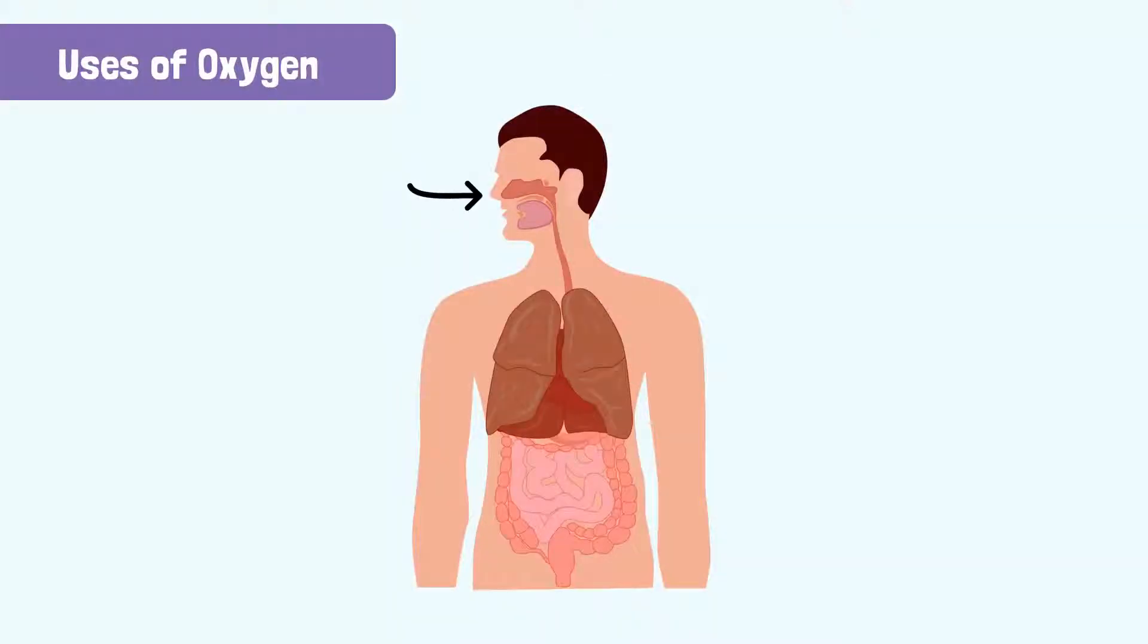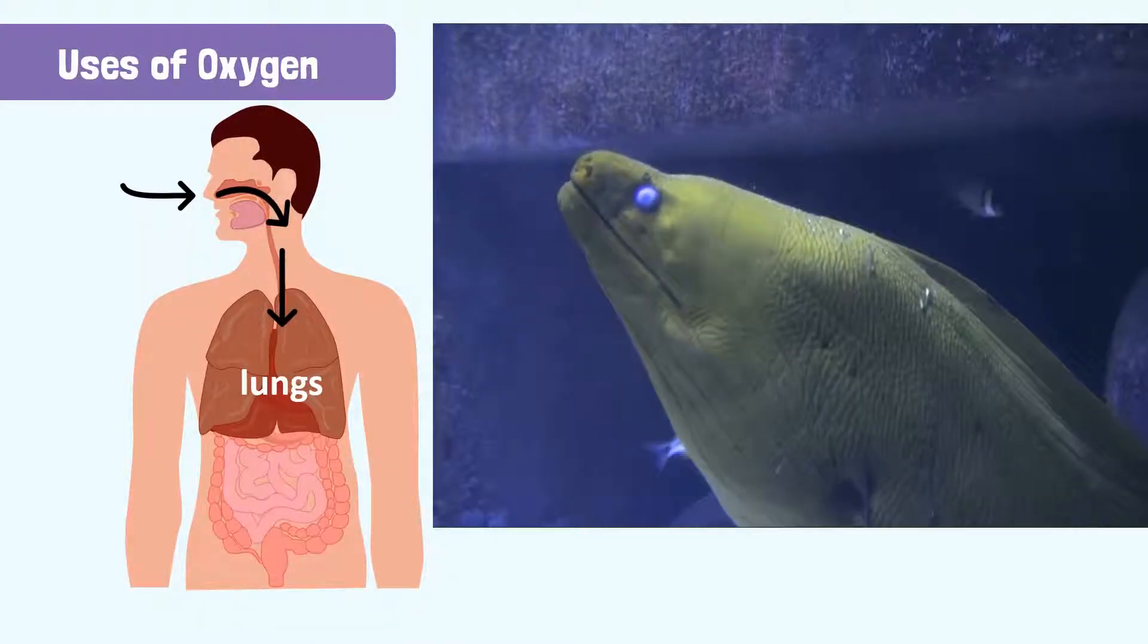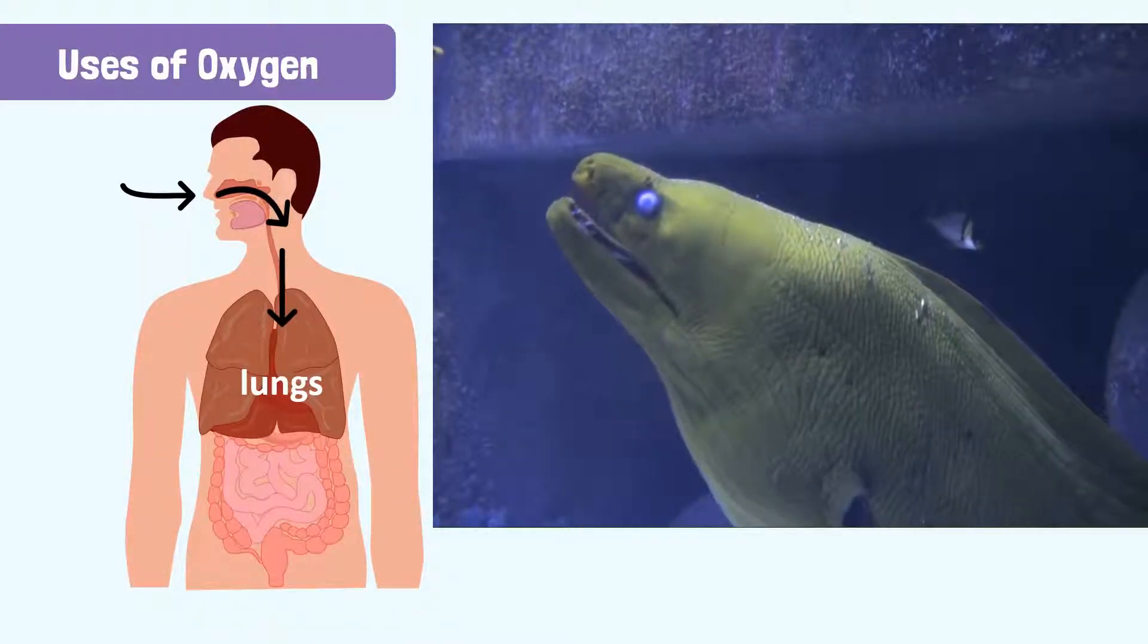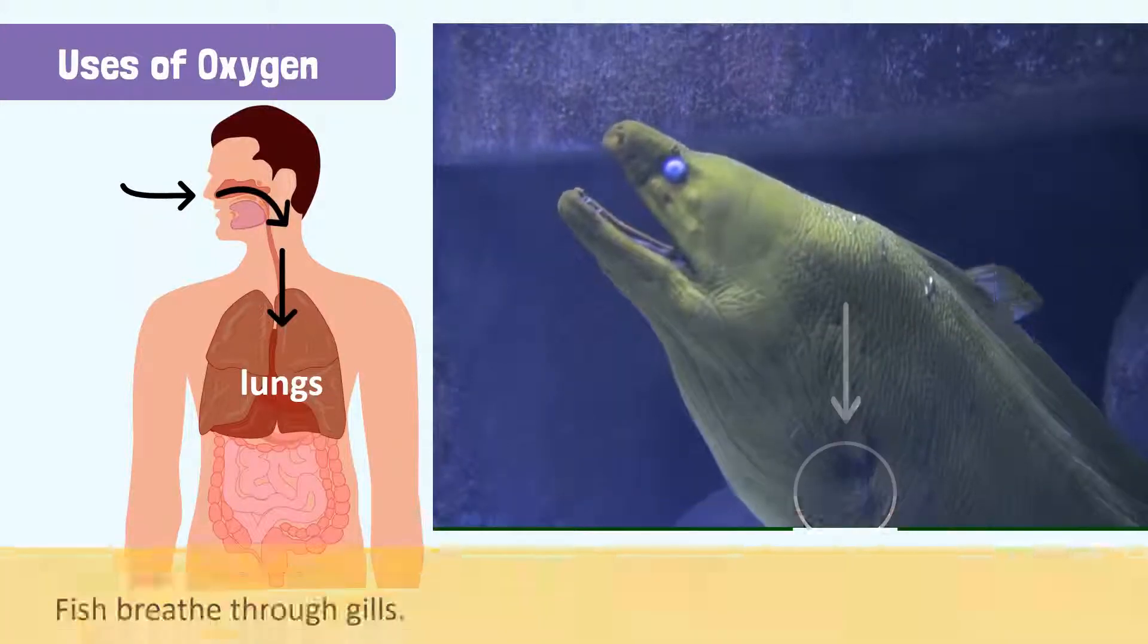We breathe with our nose and from there, the air goes to our lungs. Fish breathe in water and filter oxygen that is dissolved in the water. They breathe with special organs on their bodies called gills.